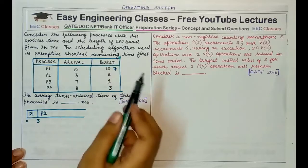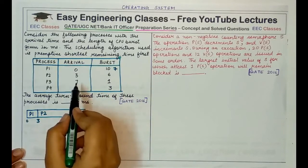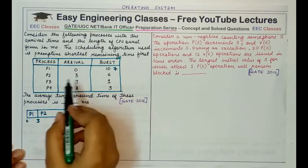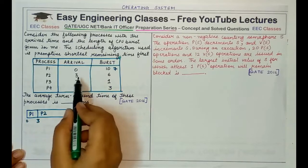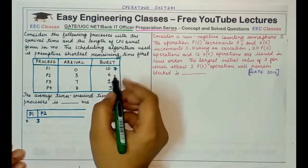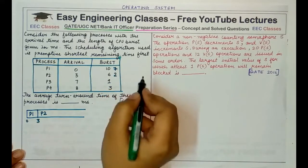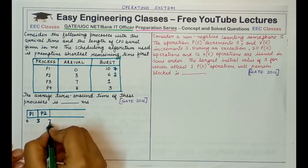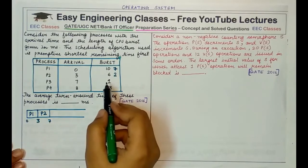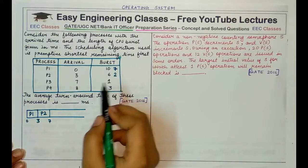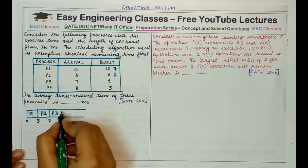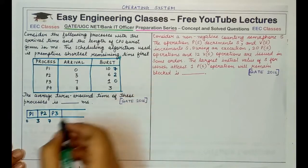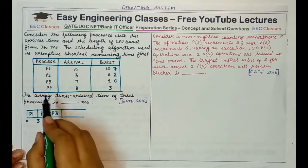At time point seven, P2 has executed four units and its remaining time is two units. But P3 arrives at time seven with a remaining time of one, which is shorter than both P2 and P1, so we execute P3 first. P3 completes its execution in one millisecond, at time period eight.